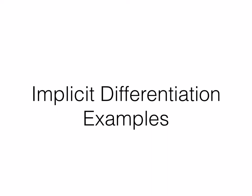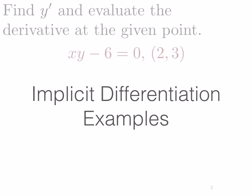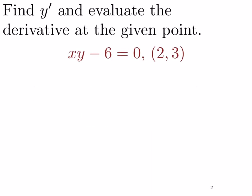In this video we want to look at some additional examples for implicit differentiation. So as our first example, let's find y prime and evaluate the derivative at the point. We have here a function xy minus 6 equals 0. We realize that xy is a coupling of the x and y, the independent and dependent terms, so this is an implicit function.